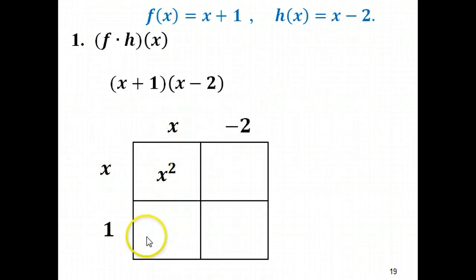Now then we go x times 1 would give me simply 1x. We don't write 1x, we just write it as x. I continue to fill in my grid. Negative 2 times x would give me negative 2x. Then negative 2 times 1 should give me a negative 2.